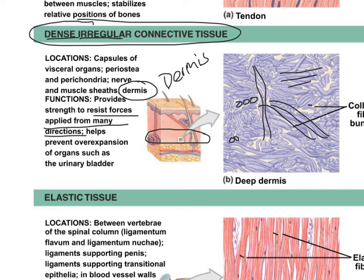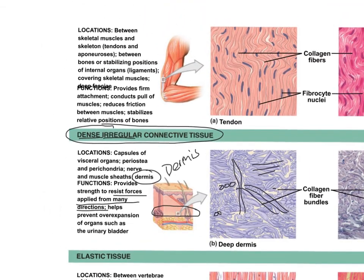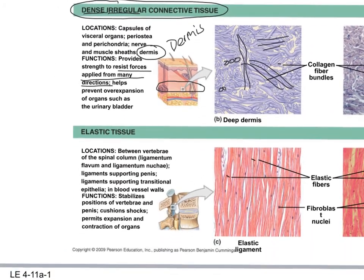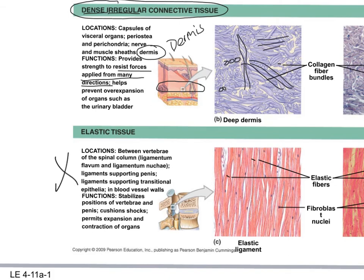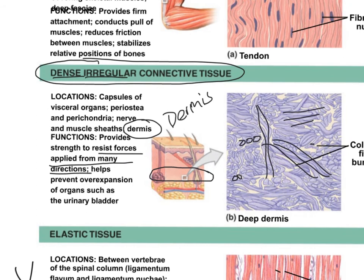You would have to identify this picture in lab as dense irregular connective tissue, and for lecture you would say where it's located and what it does. As we go through the semester, we might touch on dense regular connective tissue and elastic tissue, but for this exam we're sticking to dense irregular connective tissue.